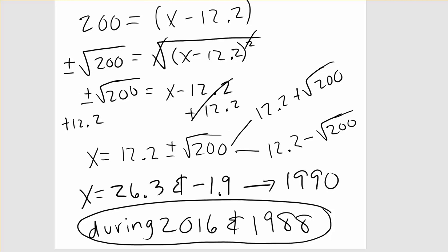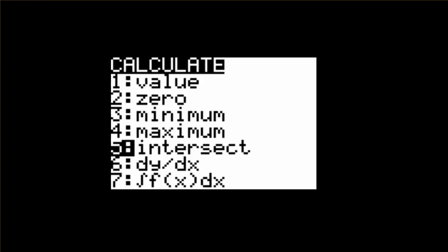If we want to check ourselves graphically, since we already have our equation in Y1, we can put the value of 5 in Y2 and find the intersection and double check that what we did algebraically is correct. If we hit the second button and then the trace button, that will get us to our calculate functions and we want to choose number 5, which is the intersect feature. This is one of our easiest features. If we hit enter, enter, enter, it should give us one of our intersections. Here we see negative 1.9, which is what we found algebraically.